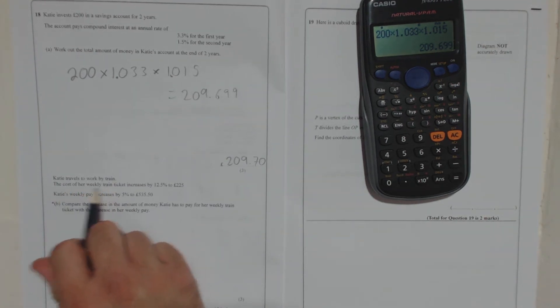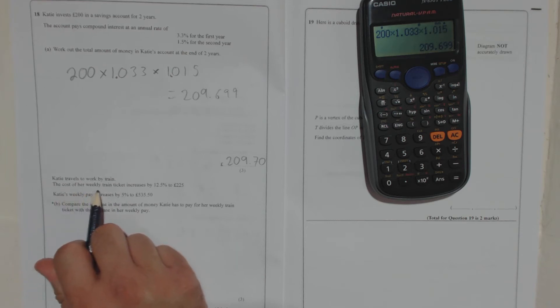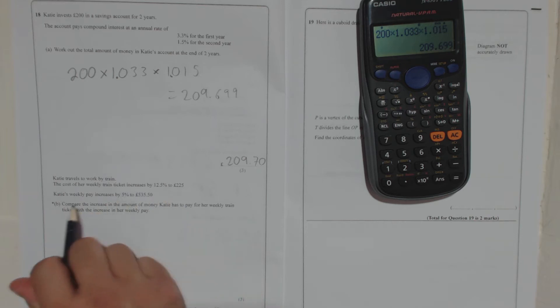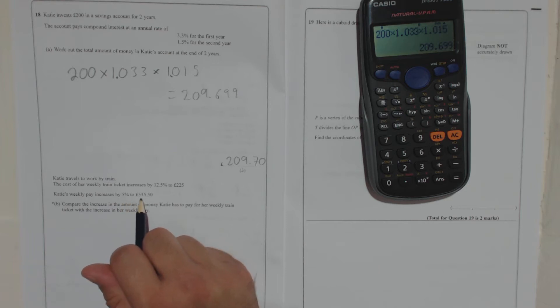Anyway, Katie travels to work by train. The cost of her weekly train ticket increases by 12.5% to 225 pounds. Katie's weekly pay increases by 5% to 535 pound 50. Compare the increase in the amount of money Katie has to pay for her weekly train ticket with the increase in her weekly pay. So basically what we want to do here is we want to know if she's better off or worse off at the end of it.